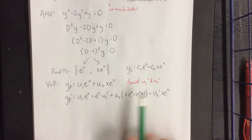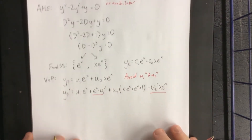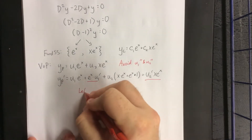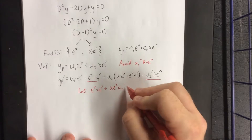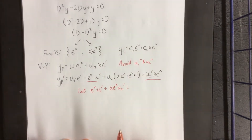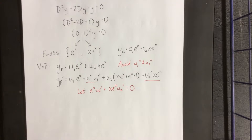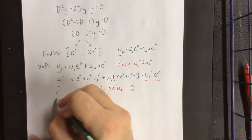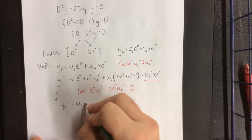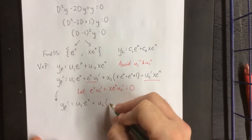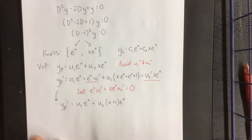Now we get to avoid second derivatives by saying: let's take anything with a u1 prime or u2 prime in it and set those aside. We'll say e to the x times u1 prime plus xe to the x times u2 prime equals zero — you are technically allowed to set this equal to whatever you want, but setting it equal to zero is the easiest choice. What this does for us is it turns our first derivative of the particular solution back into something with only two terms. We could factor that into (x plus 1) times e to the x, which will probably be easier.